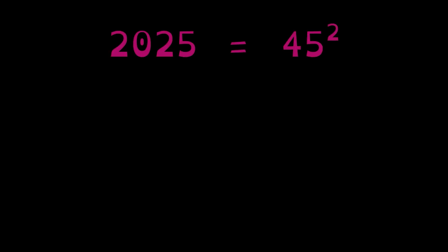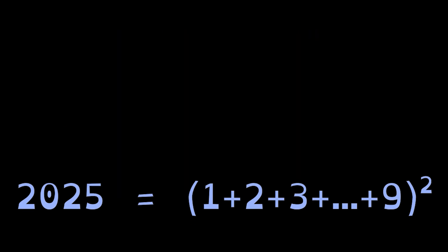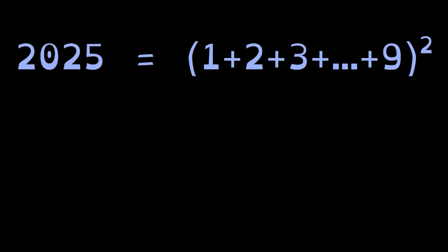But 45 can also be written as the sum of the numbers 1 through 9, which means that 2025 can be written as the sum of the numbers 1 through 9 squared. Another fun fact, 2025 can be written as the sum of the cubes between 1 and 9, namely 1 cubed plus 2 cubed plus 3 cubed and so on until 9 cubed.